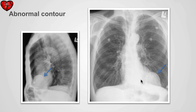In this case, we have an abnormal left contour of the heart with a focal bulge in the contour. We can also identify curvilinear calcification both on the PA and the lateral X-ray. The abnormality is caused by an aneurysm of the left ventricle.